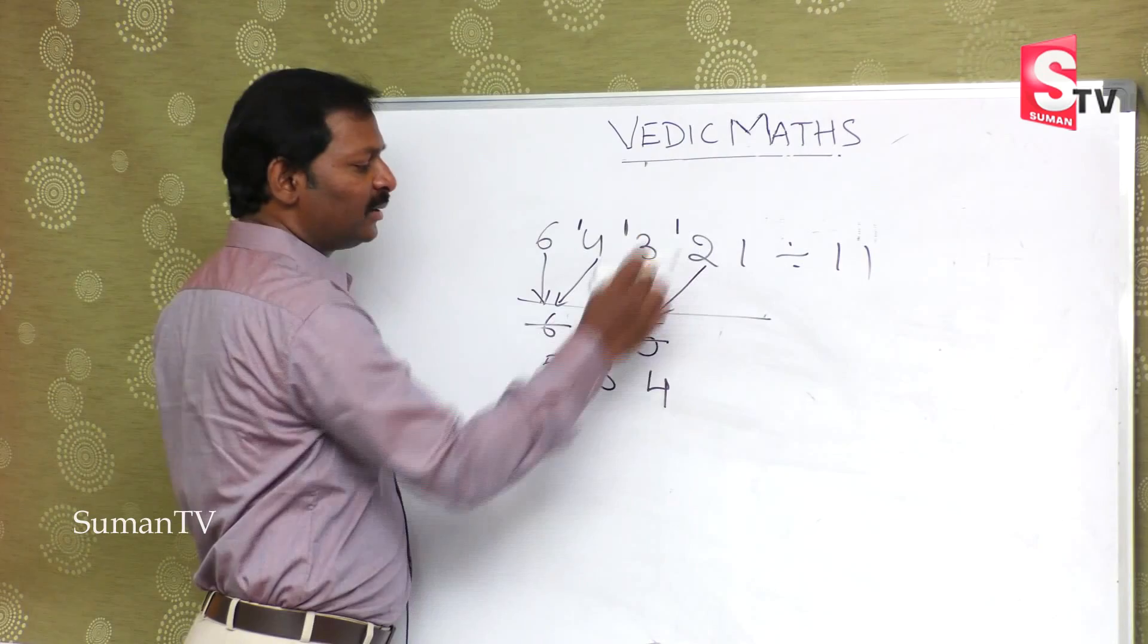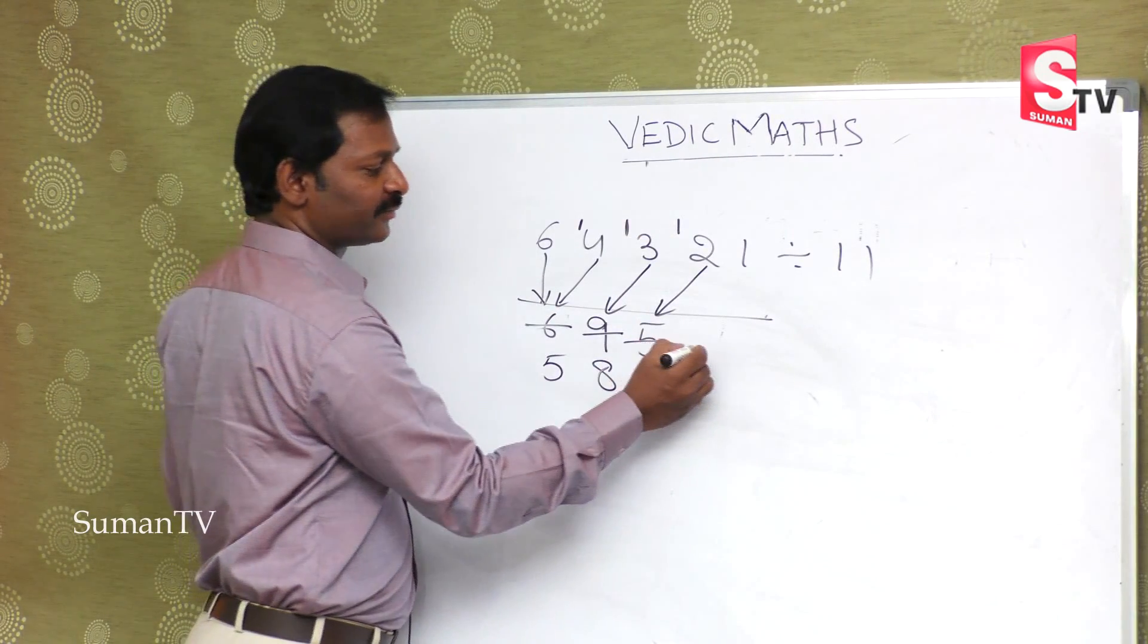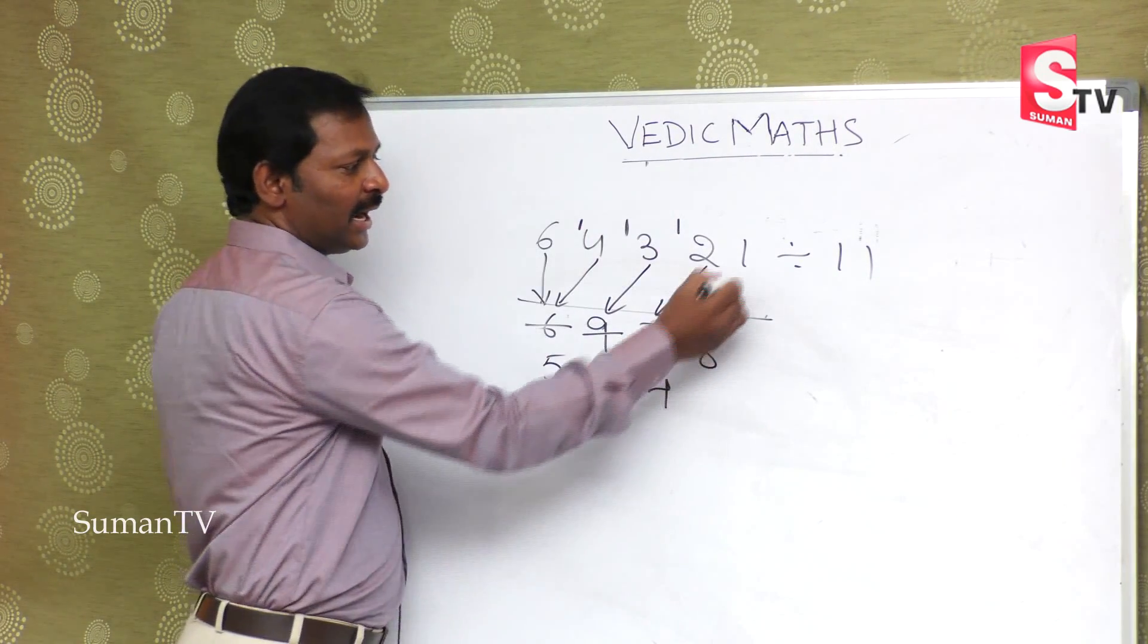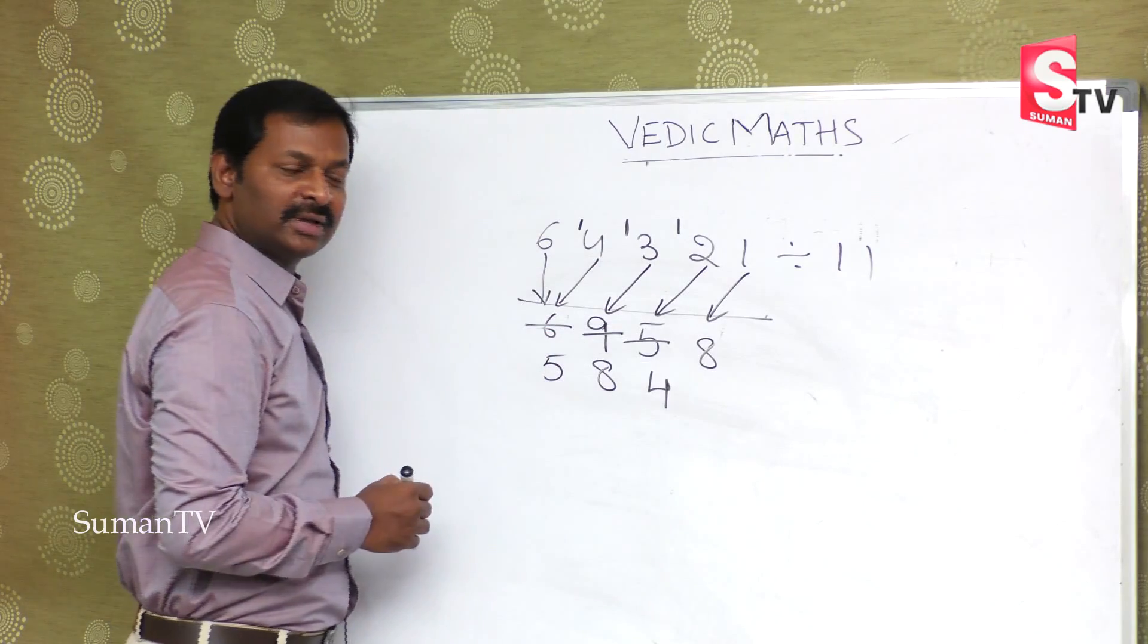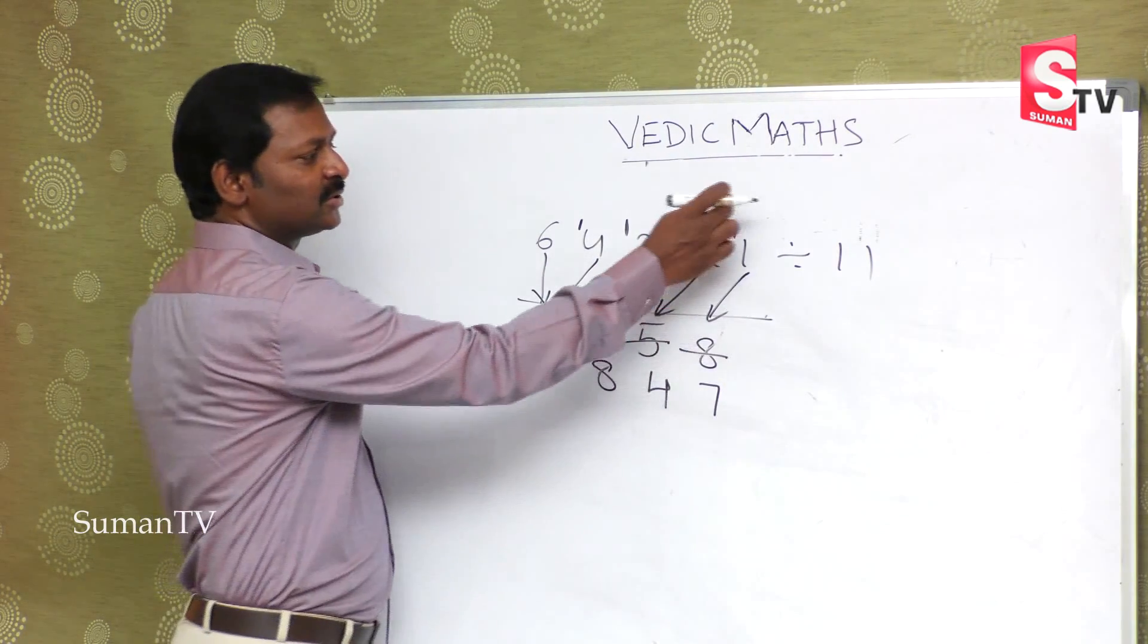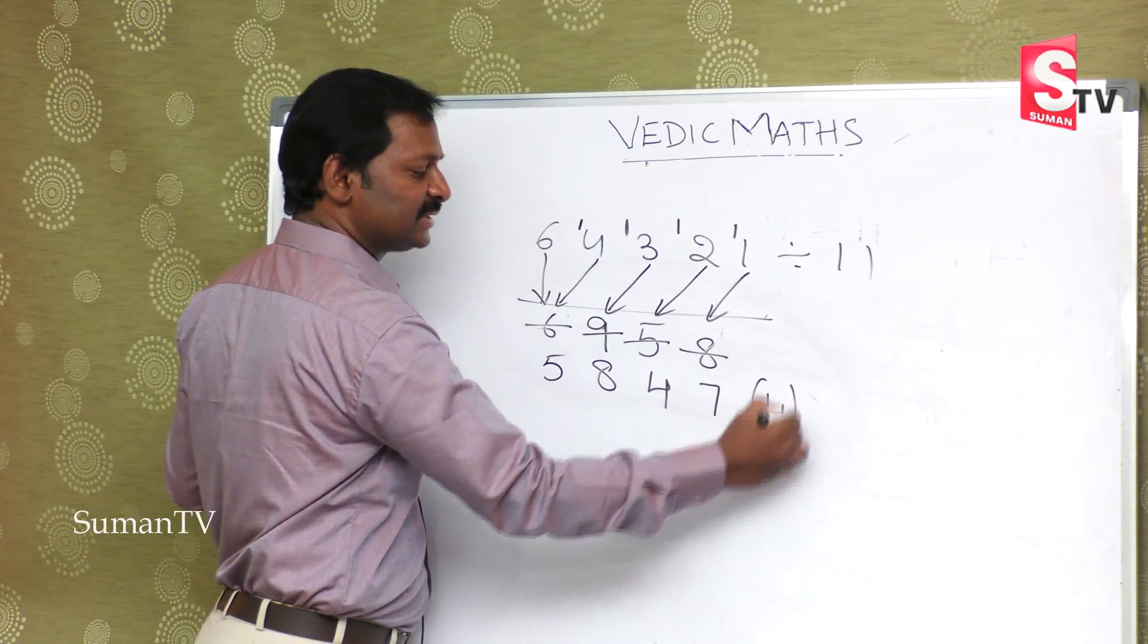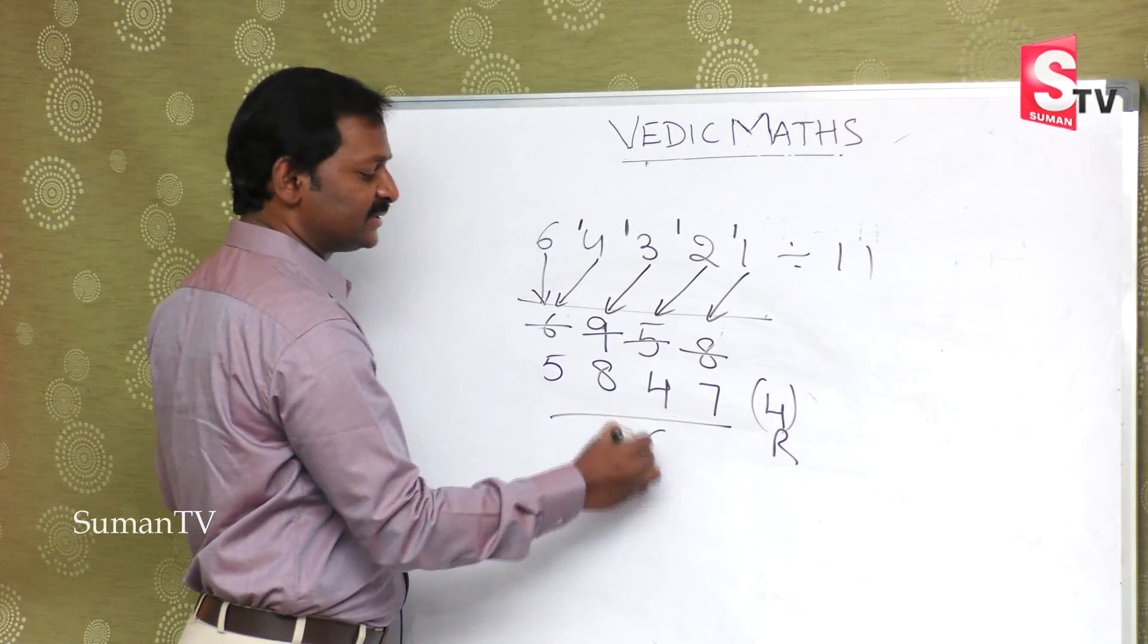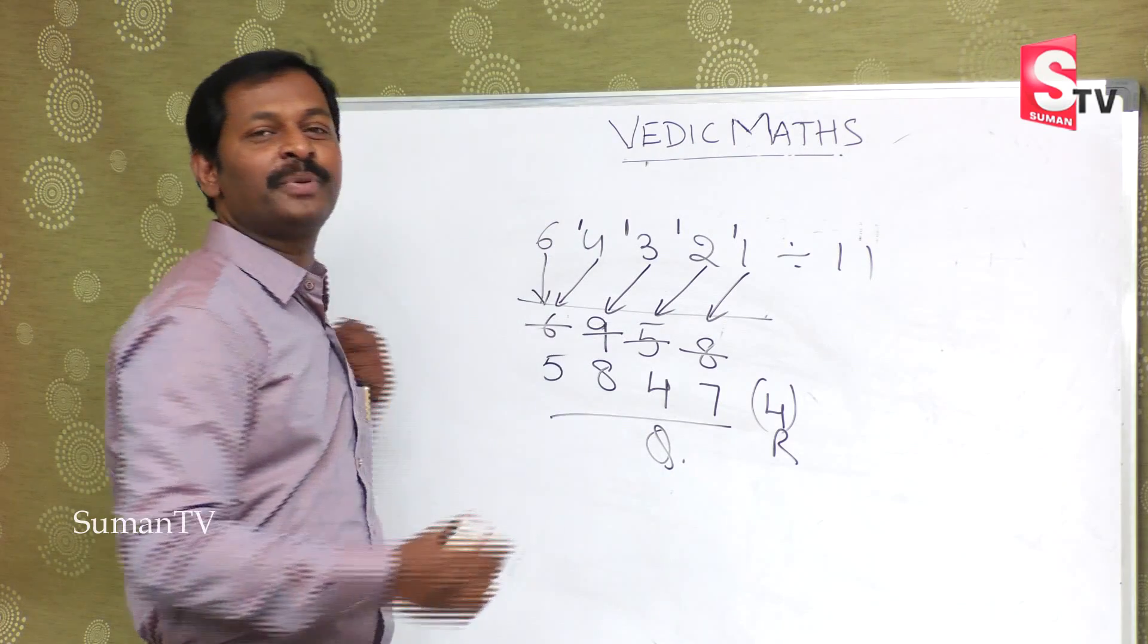So 12 minus 4, how much? 8. And 1 minus 8 is not possible, so this will become 0 and here 11. 11 minus 8 is 3. This is the final remainder and this is the quotient.